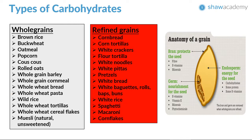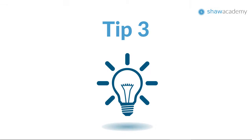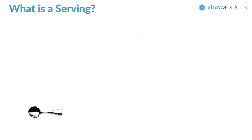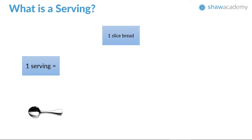Moving on to tip number three — what is a serving? Lots of people are confused about what a serving actually looks like, and many people overestimate it. One serving is one slice of bread — whether that is whole grain, brown, or white — though whole grain is recommended.